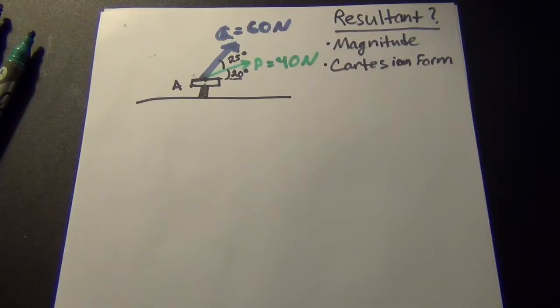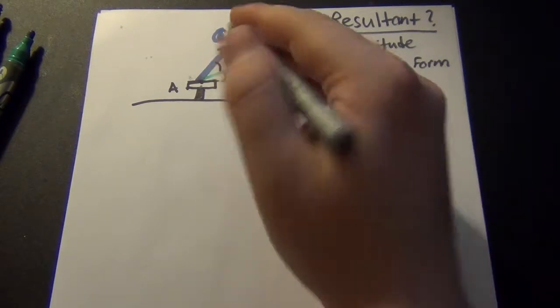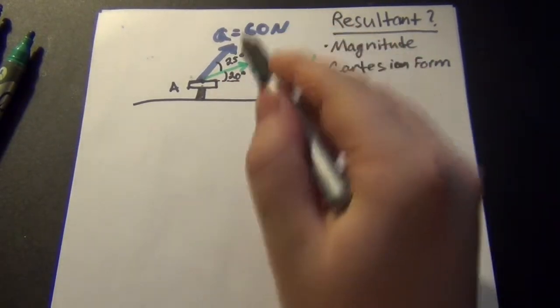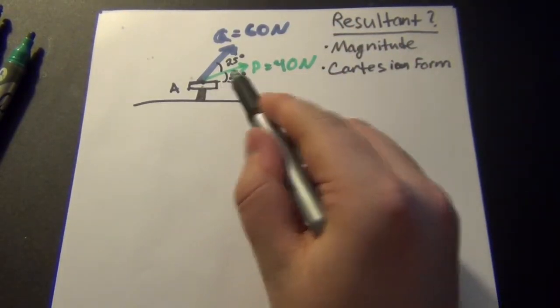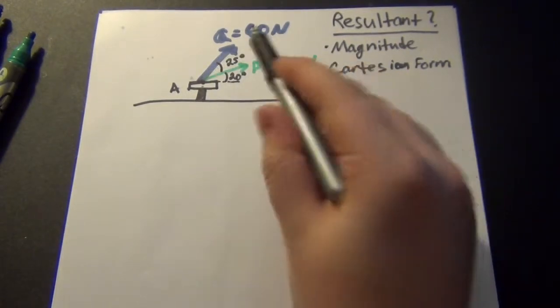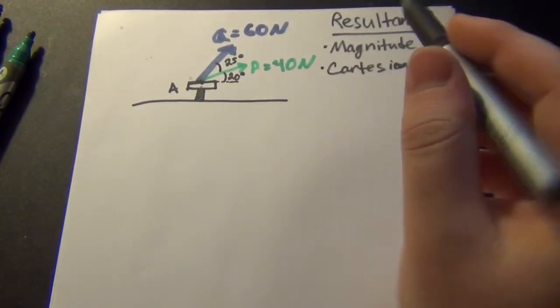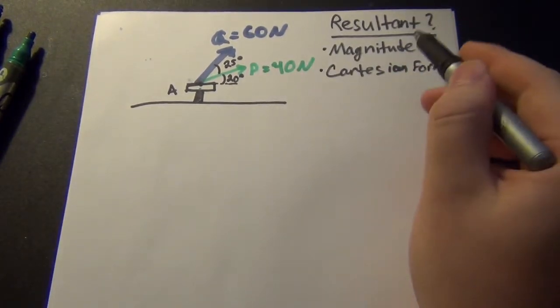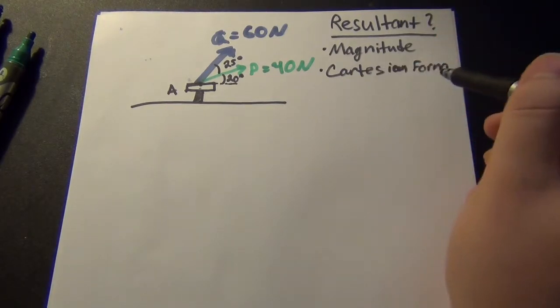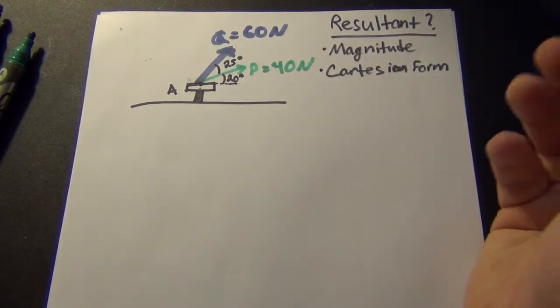Hey everyone, this is Andrew, and in this video we're going to go over a simple example of just adding forces. Now, here we have a force Q and a force P acting on this little screw thing at their respective angles and their respective magnitude forces. And what we're asked to find is the resultant magnitude and the resultant Cartesian form of the resultant vector.